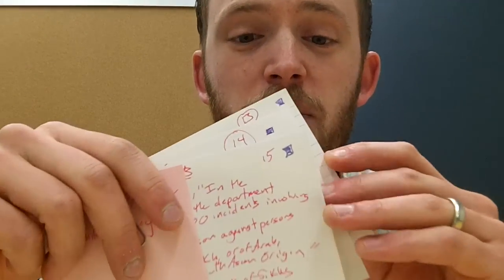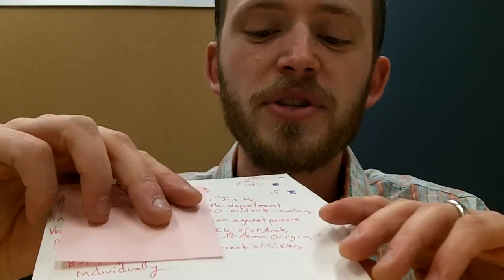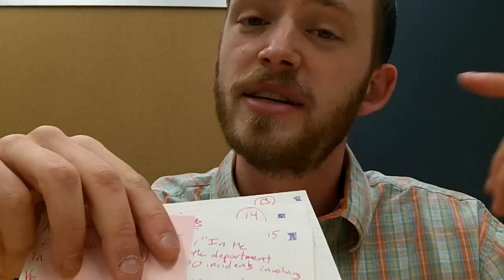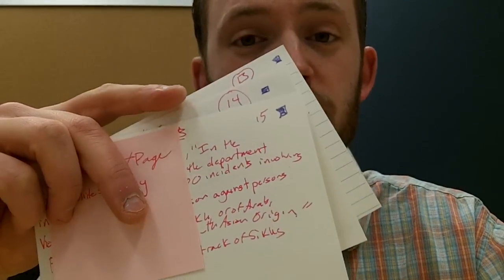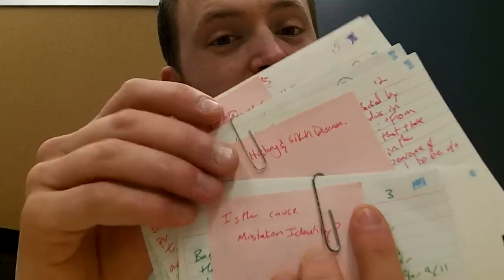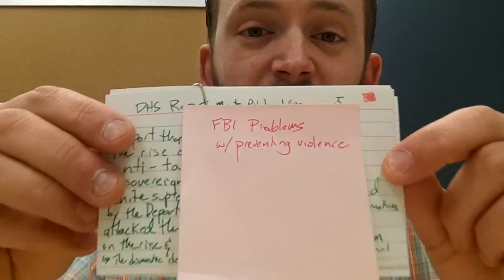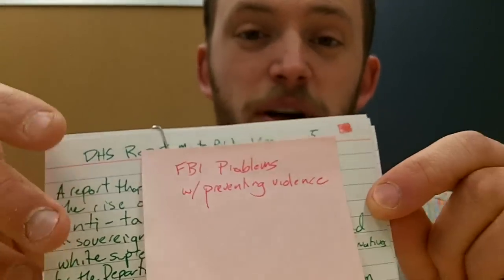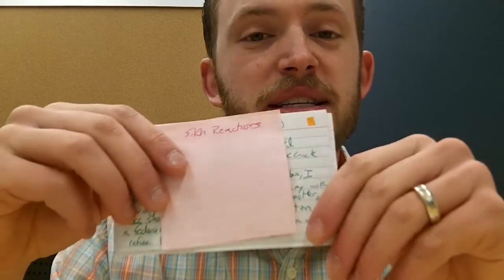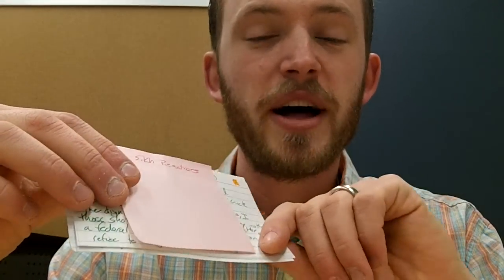Next I went to my purples, which dealt with Oak Creek. I looked at all my purples and decided which order I wanted to talk about them, then put those all together. I'm going to put them behind these so that I will talk first about this group, then about this group, then about this group. This goes on throughout — I did it with my preventing violence category as well, and then I put down Sikh reactions as well.